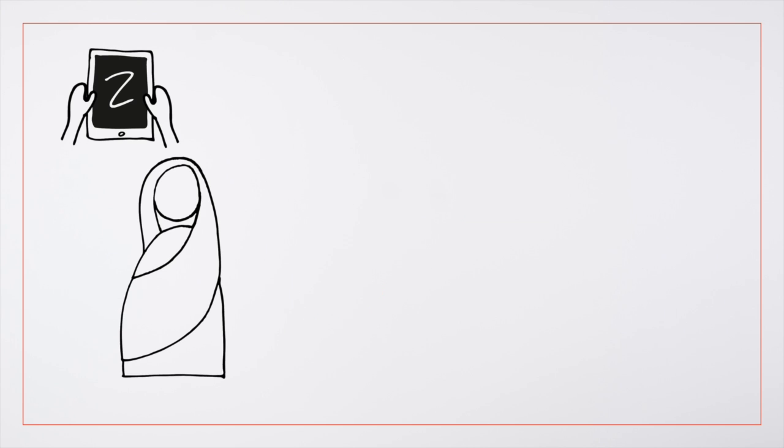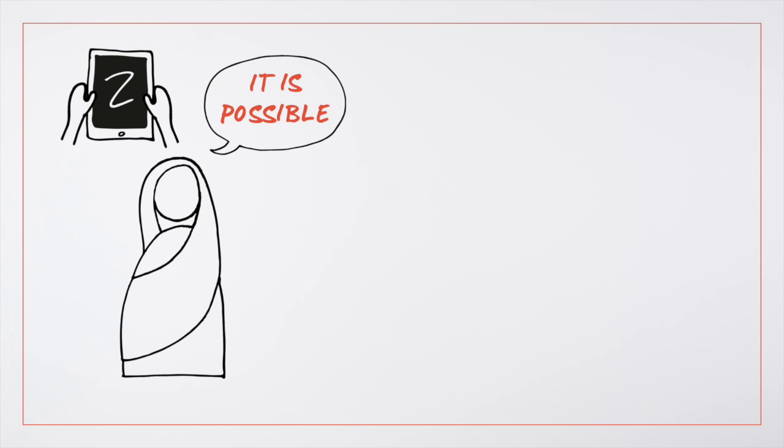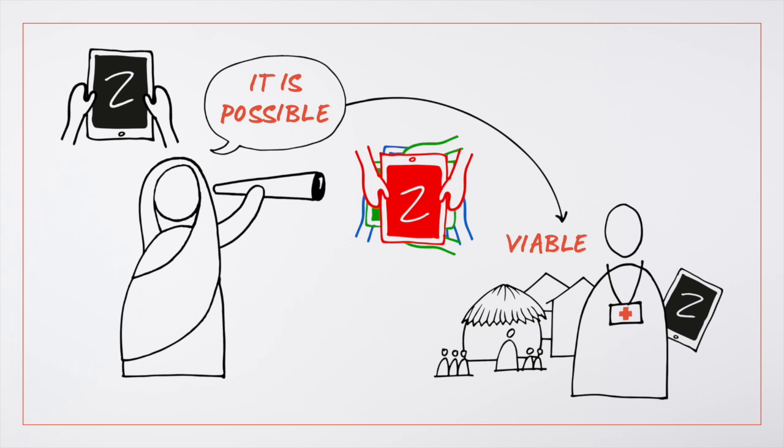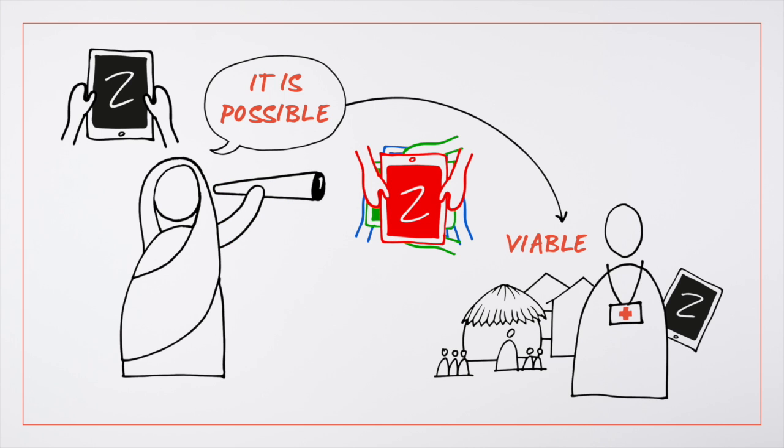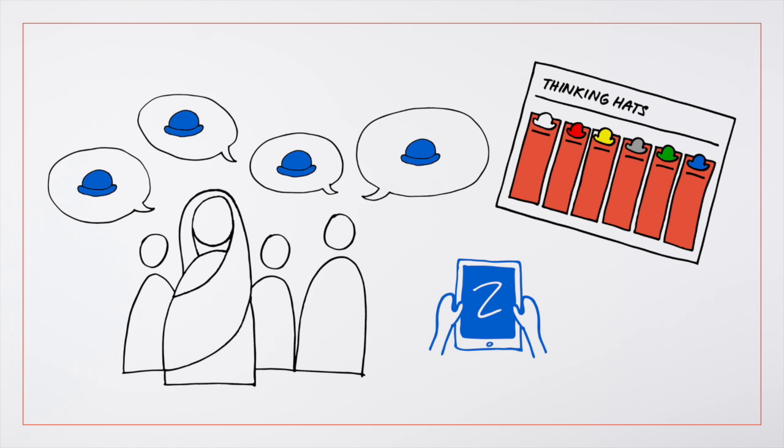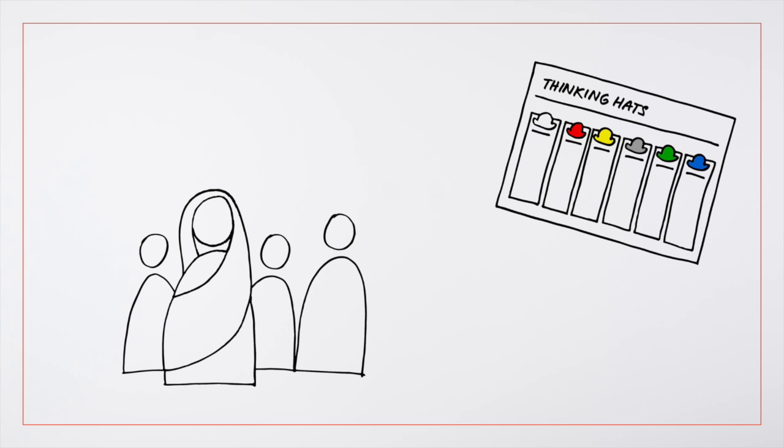She is convinced that the idea is a good one, but she knows that she will need to consider many different viewpoints to take it from interesting to viable. She assembles a group of her team members to think about aspects of the idea using the range of hats. Mary doesn't have any hats, so she uses badges and asks everyone to adopt the same perspective at the same time.